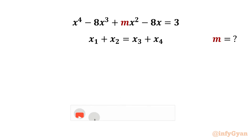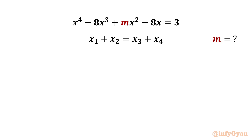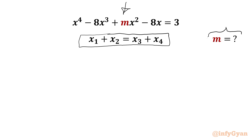Hello my dear friends, welcome back to Infigyan. Today in this video we have a very interesting question from algebra. We have one quartic equation x⁴ minus 8x³ plus mx² minus 8x equal to 3, and we have to evaluate the unknown m, which is the coefficient of x² in our equation. Given that the sum of two roots equals the sum of the remaining two roots. So let's get started.